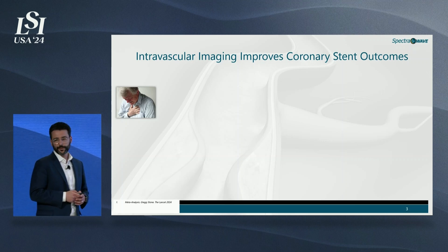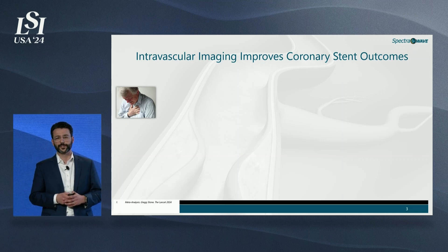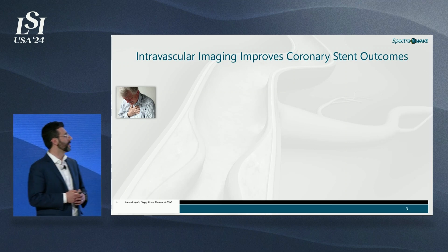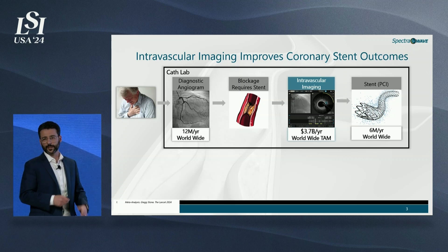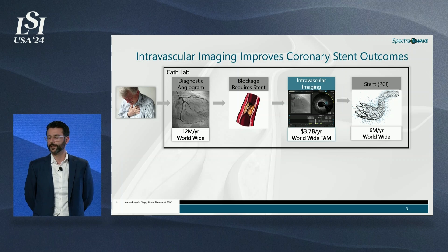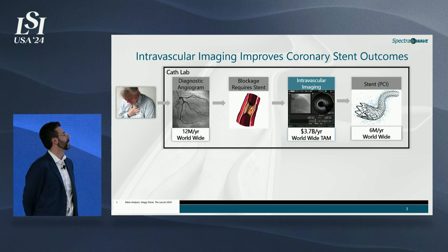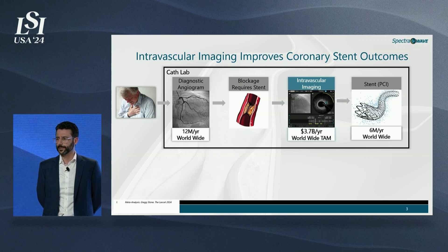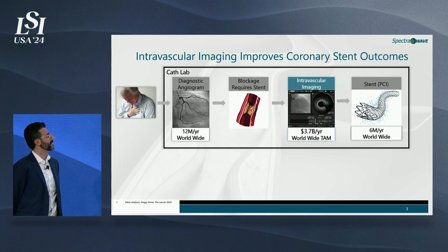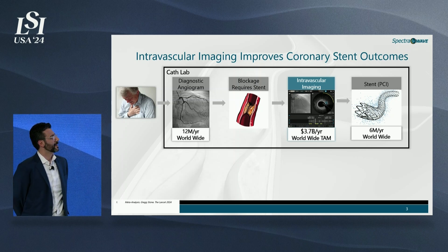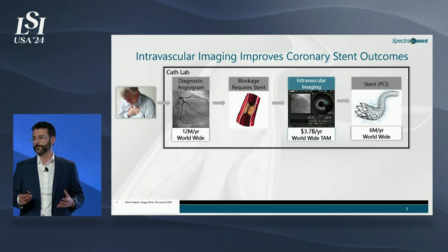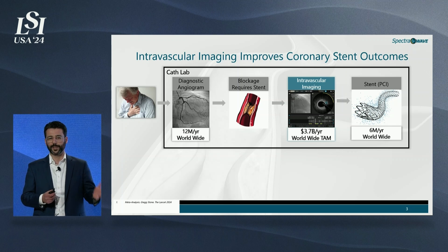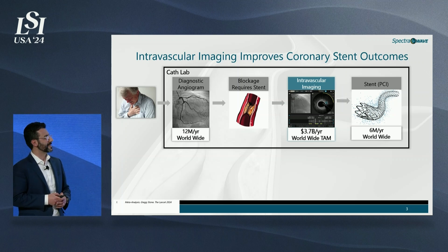Patients who exhibit symptoms of angina or chest pain are typically recommended for a diagnostic angiogram, where interventional cardiologists look for major blockages in the three arteries that feed the heart muscle. This is a very standard procedure, with about 12 million performed each year. When a blockage is identified, the best outcomes come not just from angiography alone, but from using intravascular imaging to optimize the planning and placement of the stent.